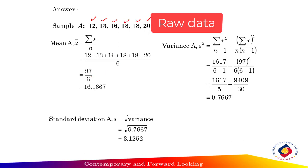97 divided by 6 equals 16.1667. And for variance, s squared equals total x squared, 1617, divided by n minus 1, minus total of x, 97 squared, divided by 6 times 6 minus 1.